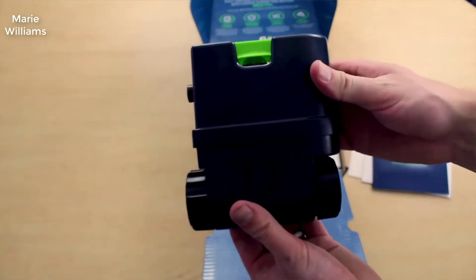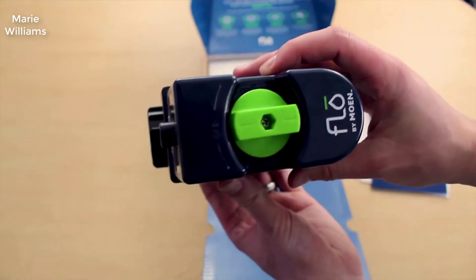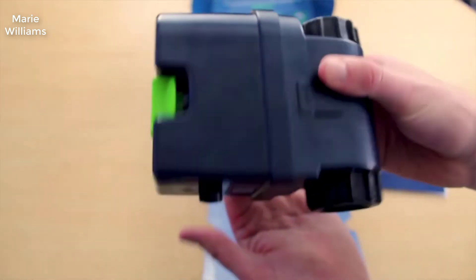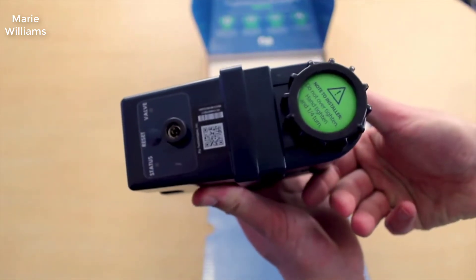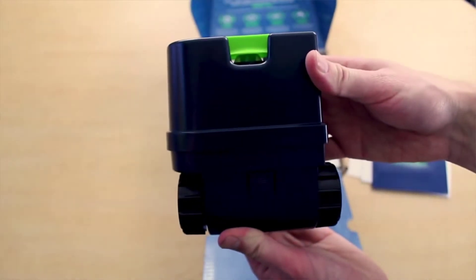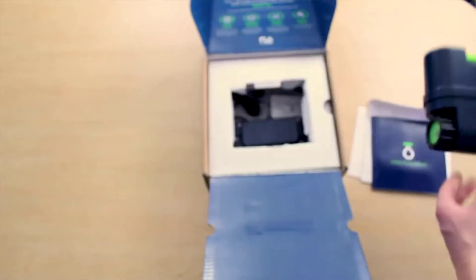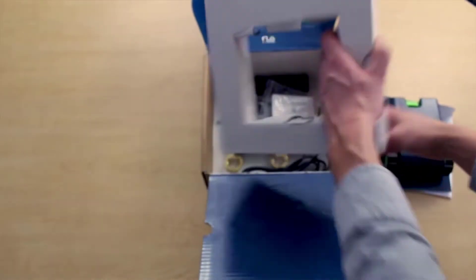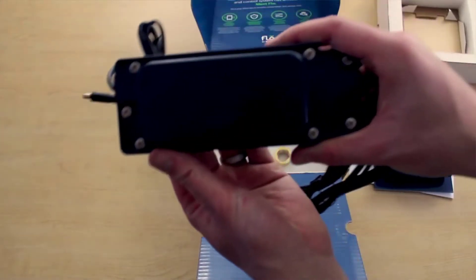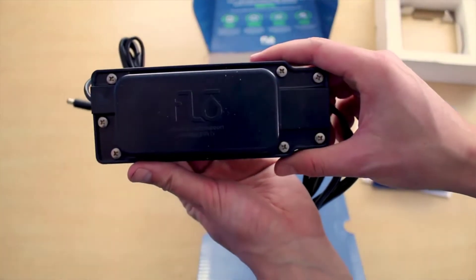Now the other thing this can do is if a pipe would burst or something like that anywhere in the house, if say you're on vacation and a pipe burst in your home, what this will do is it will detect it and automatically shut off your water at the main level so your house won't flood which is really nice protection as well.